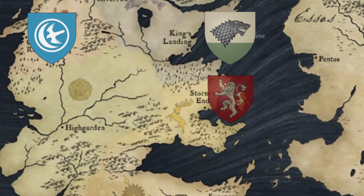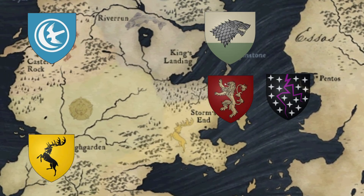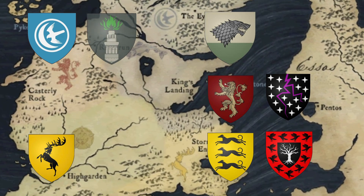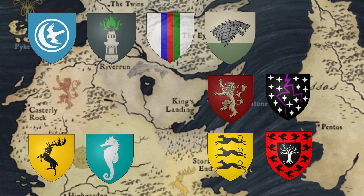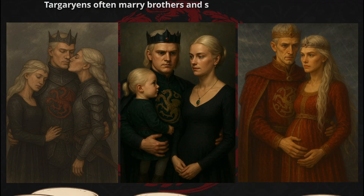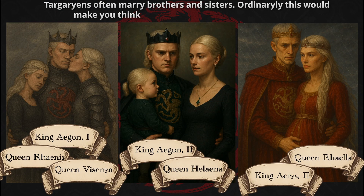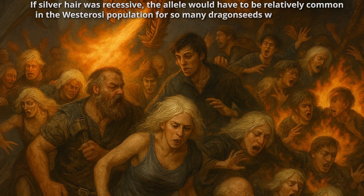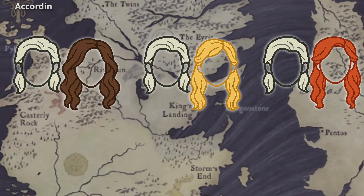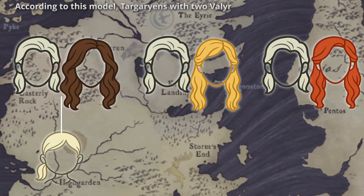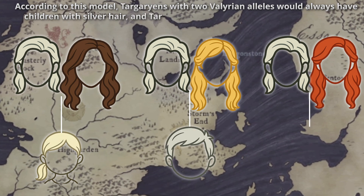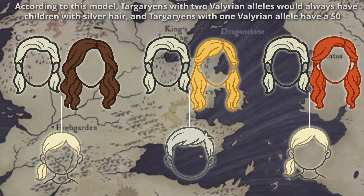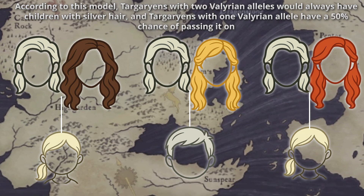Now let's go back to Westeros. What would be the hierarchy of hair color alleles? I think I can make a case for the Valyrian allele to be dominant over all the others. We know that Targaryens often marry brothers and sisters, so it's not surprising that most of their offspring has the silver hair of their line. However, we also know bastard children of the Targaryen house — the dragon seeds — also sport silver-golden hair. Considering that the Valyrian allele didn't exist in Westeros prior to their emigration from Old Valyria, the only way this is possible is if the Valyrian allele is dominant over all the others, thus overriding their expression.